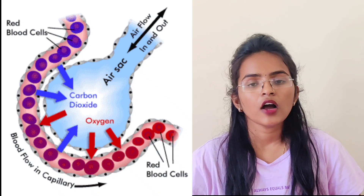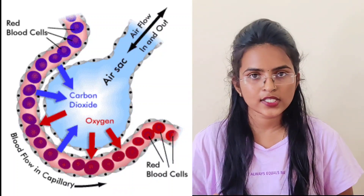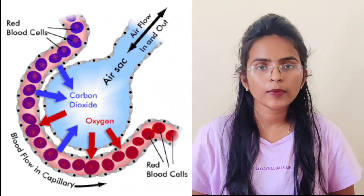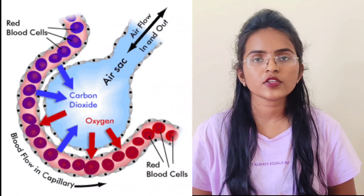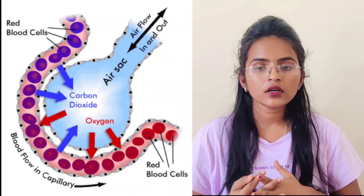Respiratory epithelium is also known as pseudo-stratified columnar epithelium, and the bronchioles are lined by simple cuboidal epithelium. In osmosis, movement occurs from lower to higher concentration, and in diffusion, it occurs from higher to lower concentration. In the gas exchange mechanism, the alveoli in the lungs are filled with air in a process called gaseous exchange. Oxygen moves from the air in the alveoli into the blood capillaries, and carbon dioxide moves from the blood in the capillaries into the air in the alveoli.